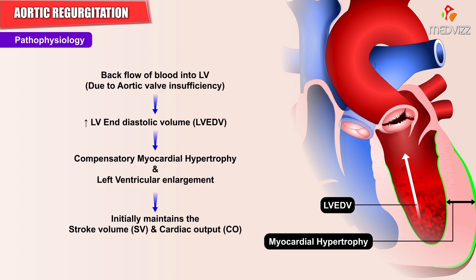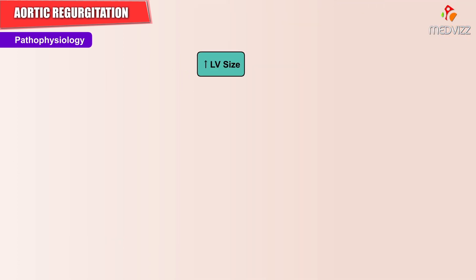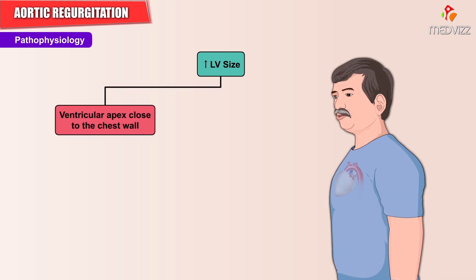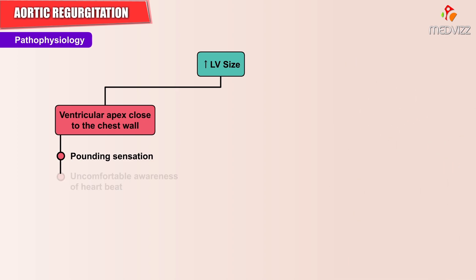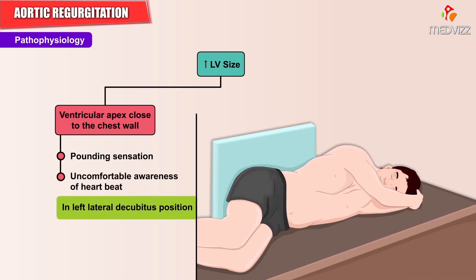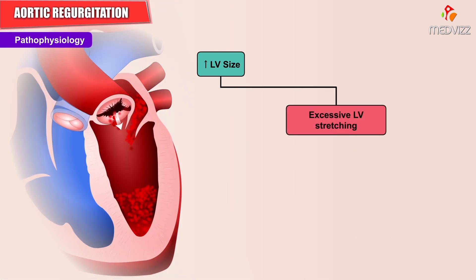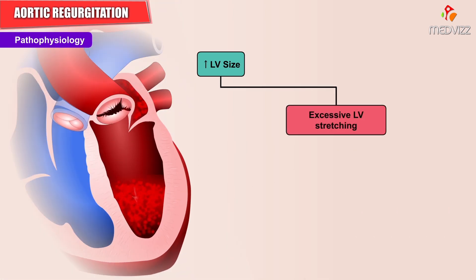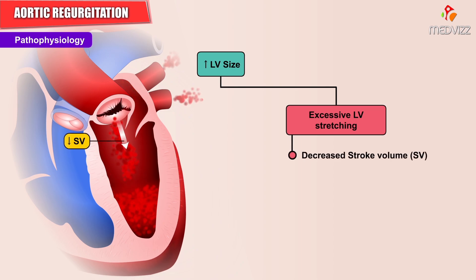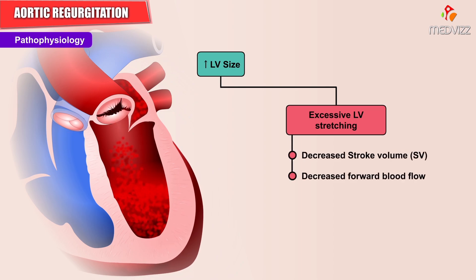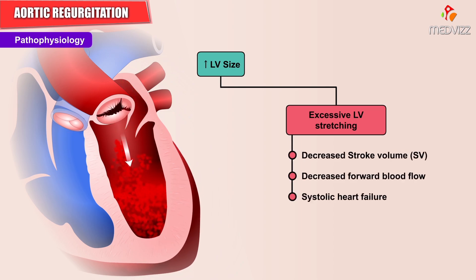This initially maintains the stroke volume and cardiac output, but the increase in left ventricular size brings the ventricular apex close to the chest wall, causing a pounding sensation and an uncomfortable awareness of the heartbeat, especially in the left lateral decubitus position. The excessive left ventricular stretching later leads to decreased stroke volume, decreased forward blood flow, and systolic heart failure.